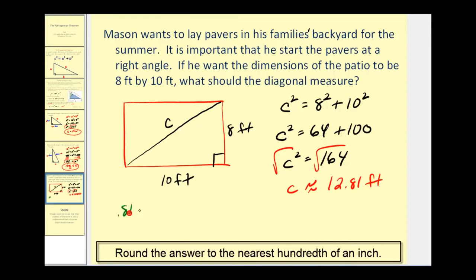So .81 feet, put that over one. To convert this into inches, we'll multiply by 12 inches, which is equal to one foot. Notice how the units of feet simplify out. So we'll find this product and it will give us the inches.